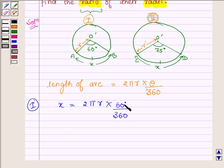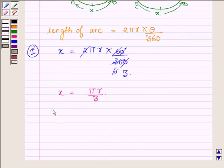We have 60 into 360, 2 into 3 is 6, so x is equal to pi r upon 3, which implies r is equal to 3x upon pi.